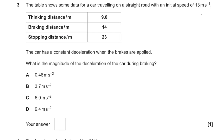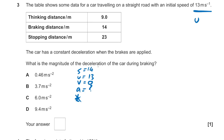Question 3: some data for a car traveling on a straight road with an initial speed of 13 meters per second — that's our u. The car has constant deceleration when the brakes are applied. What is the magnitude of the deceleration during braking? We know u = 13, v = 0 because it comes to a standstill, and the braking distance is 14 meters.